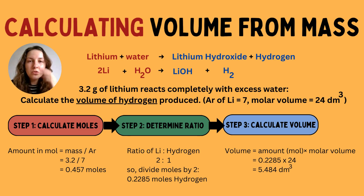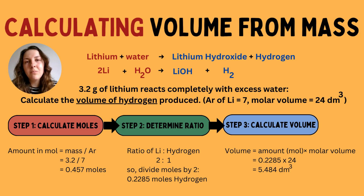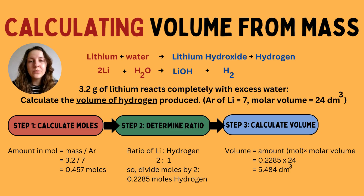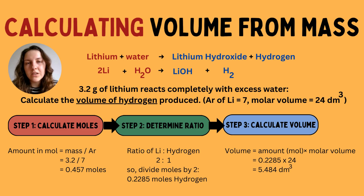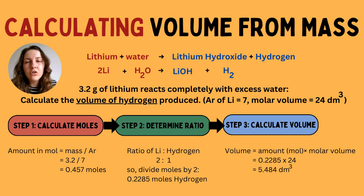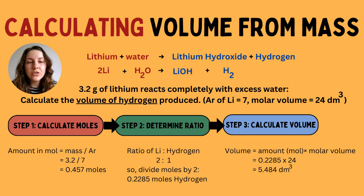Step two: now you have the moles of lithium, work out the ratio between lithium and hydrogen. It's really important to check that the equation has already been balanced. In this case it has — we have two lots of lithium to one lot of hydrogen. You're looking for the coefficient, the big number in front of each molecule. Hydrogen doesn't have a number written in front of it, so we assume it's one. Because two lithium makes one hydrogen, we divide our moles of lithium by two, giving 0.2285 moles of hydrogen.